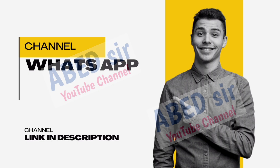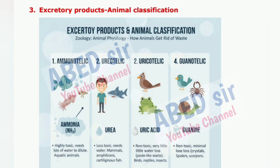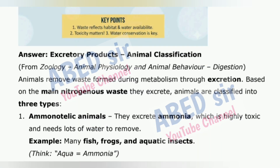Next Important Short Question 3: Excretory Products — Animal Classification. Animals remove waste formed during metabolism through excretion. Based on the main nitrogenous waste they excrete, animals are classified into three types. 1. Ammonotelic animals — they excrete ammonia, which is highly toxic and needs lots of water to remove. Example: many fish, frogs, and aquatic insects. Think: aqua equals ammonia.